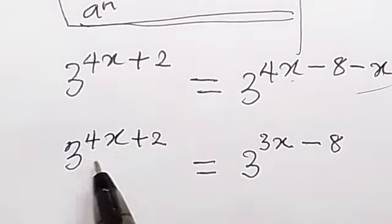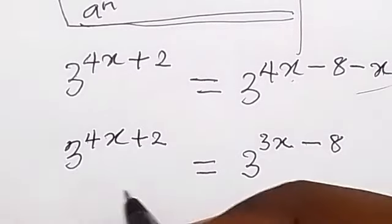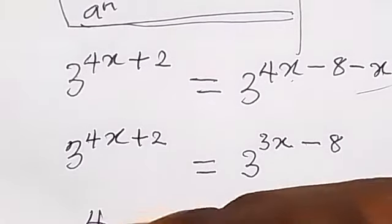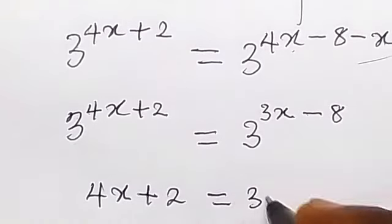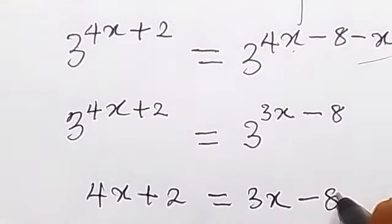Having same base on the two sides, now we can equate the power. We then have 4x plus 2 will be equal to 3x minus 8.